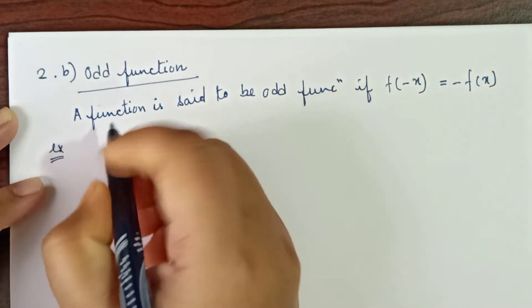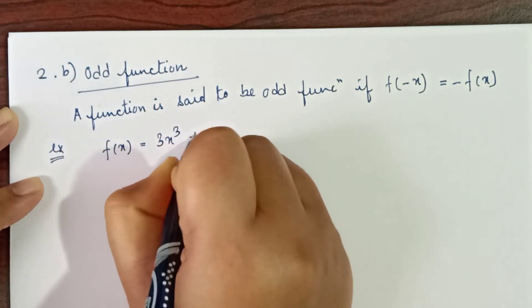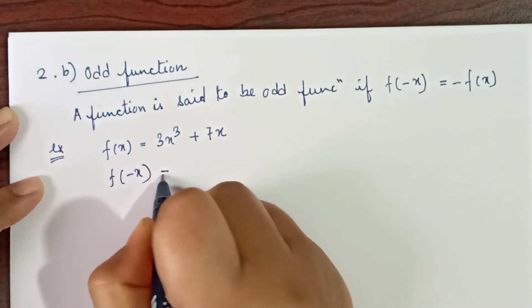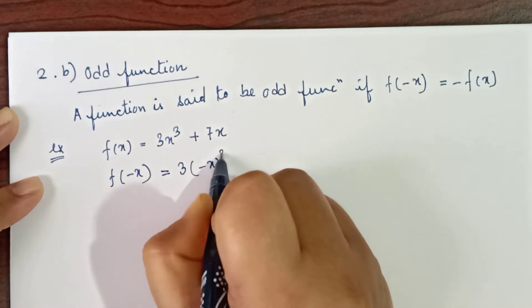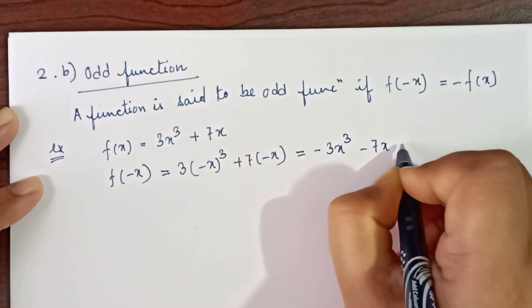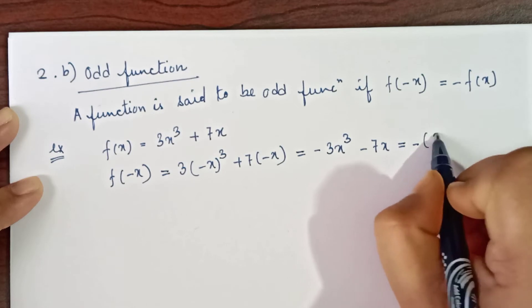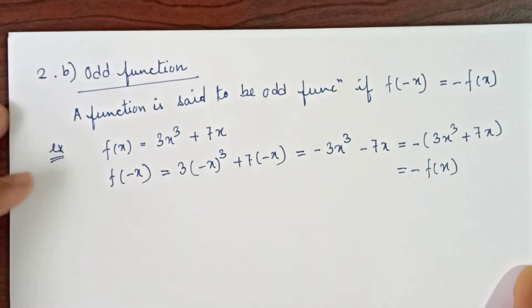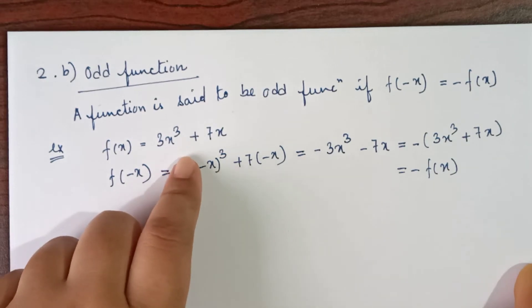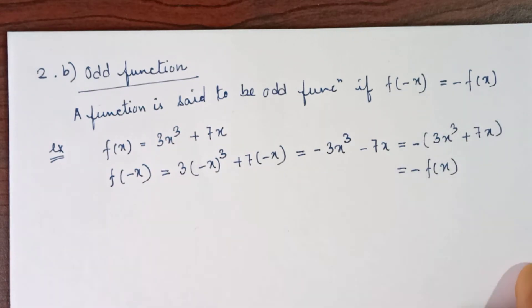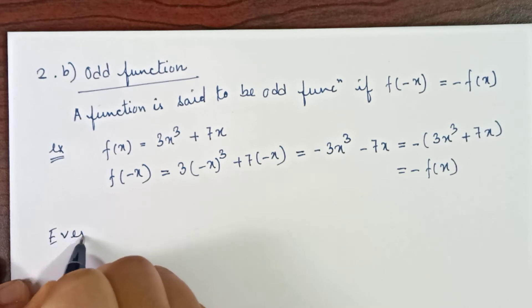For example, suppose f(x) = 3x³ + 7x. Now let us replace x by −x: f(−x) = 3(−x)³ + 7(−x) = −3x³ − 7x = −(3x³ + 7x) = −f(x). So you can see that for this function, f(−x) = −f(x) is satisfied, which is why it is an example of an odd function.